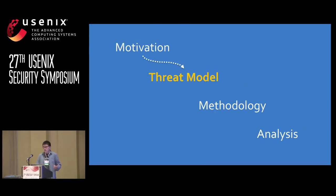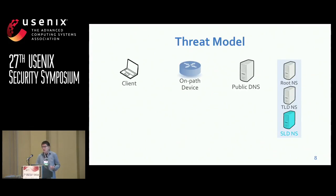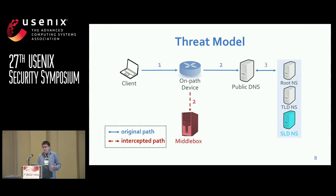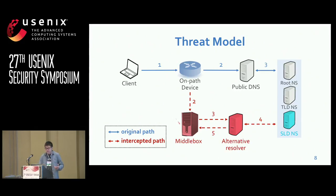Now let's take a look at the threat model. We focus on requests to popular public DNS resolvers and discuss how they are intercepted. Normally, when a client chooses to use a public DNS resolver, requests will reach the specified resolver through some unmodified devices. But some devices may manipulate the packets and redirect DNS requests to alternative resolvers, which do the rest of the work and get a response. Finally, before the response is sent back, the source IP address is spoofed. So your request to a trusted public DNS will be answered by someone else that you don't know, and it is quite hard to detect from the client side because of IP spoofing.